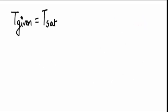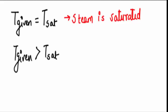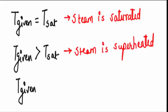So remember, if T saturation is equal to T given, the steam is saturated steam. If the given temperature is higher than the saturated temperature at a particular pressure, the steam is superheated. And if T given is less than T saturation, then the steam is wet steam.